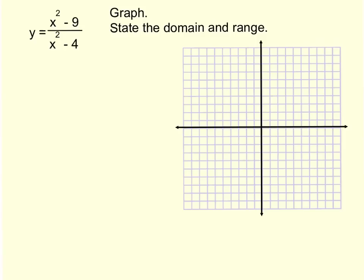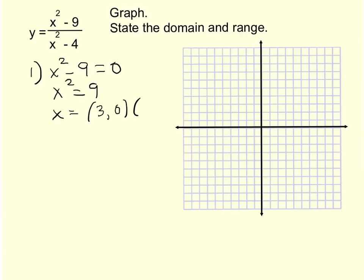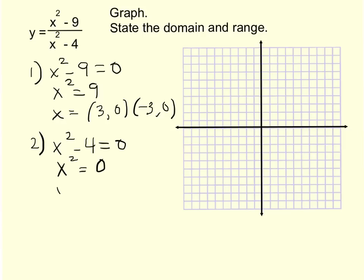The last example: I'll walk through the steps again. Step 1 — solving the numerator for x-intercepts: x² - 9 = 0, so x² = 9, giving x = ±3. So (3, 0) and (-3, 0) are the x-intercepts. Step 2 — solving the denominator for vertical asymptotes: x² - 4 = 0 gives x = ±2, so x = 2 and x = -2 are the vertical asymptotes.